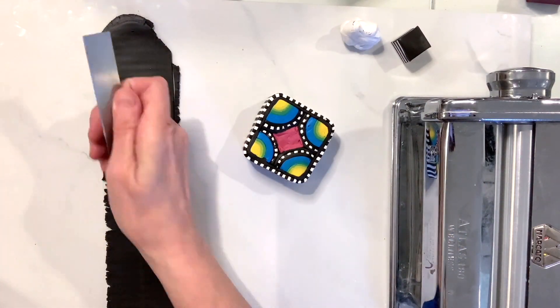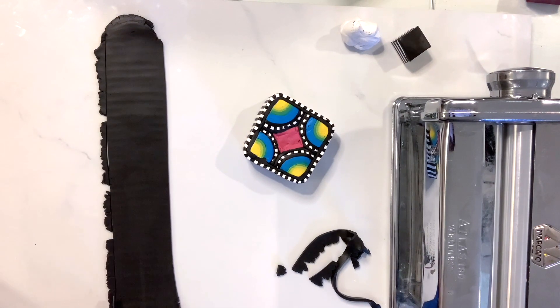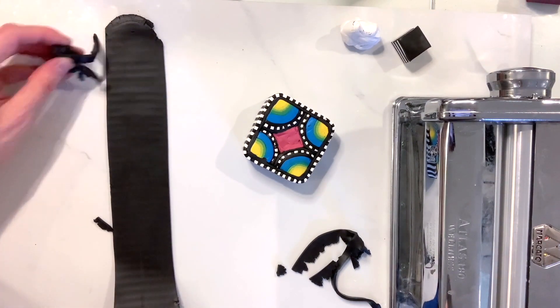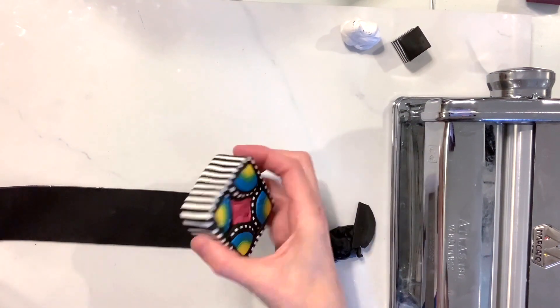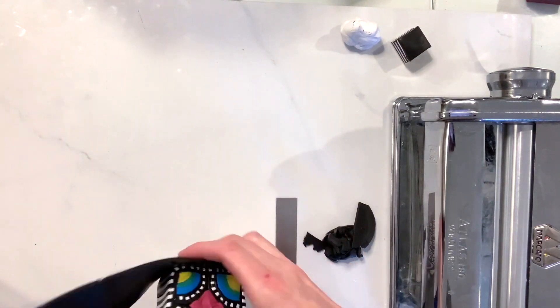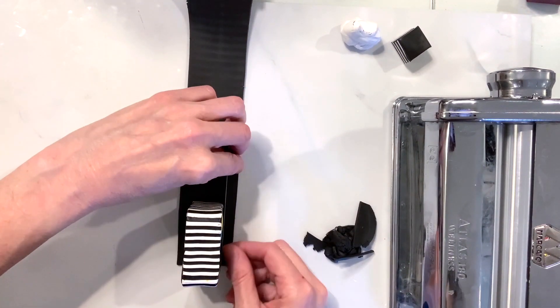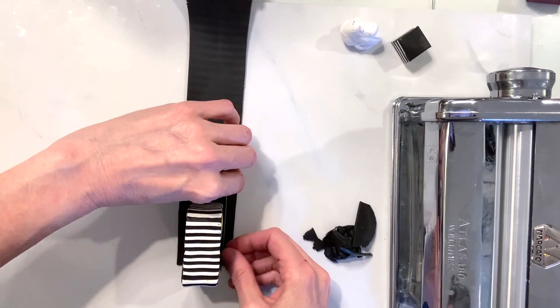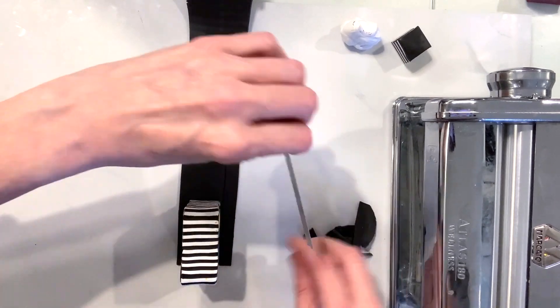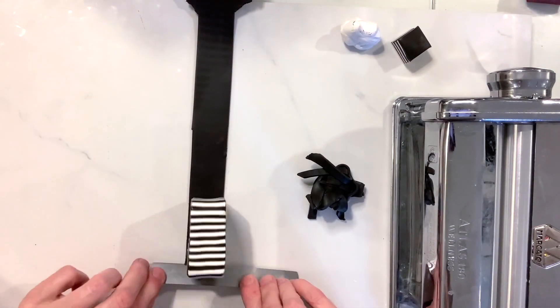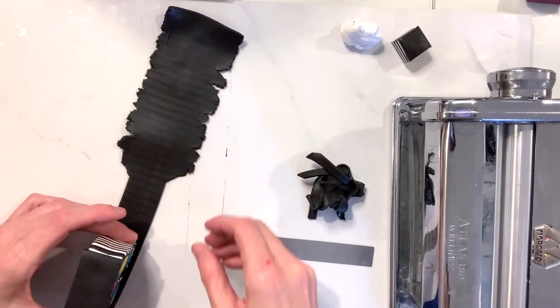So here we're going to add in our last layer to this square bullseye cane. I rolled out some black on a number one setting on my Atlas machine. You're going to cut that flush and then put that bulky cane that we just made on top of that layer of black. As I go, I like to kind of cut the edges to conform to the cane. This way you don't have to measure—no ruler or anything like that.